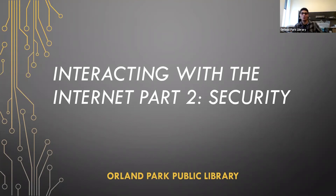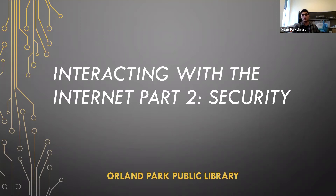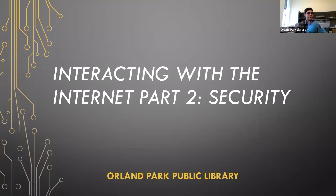Welcome to the Orland Park Public Library's Interacting with the Internet series. This is part two of two, covering security. Last week was part one, which covered privacy. There are a lot of similar topics, but I broke it down so most of the privacy and information-related stuff was last week and all the security stuff is this week. I have a lot more slides so I might go kind of fast — I'll try to keep it under an hour.